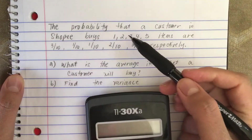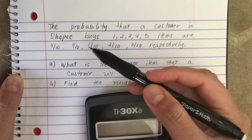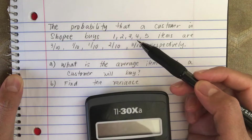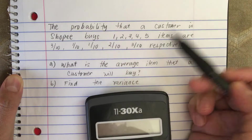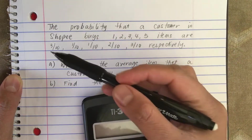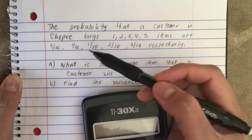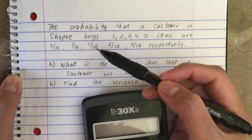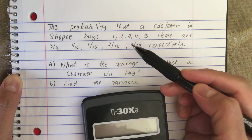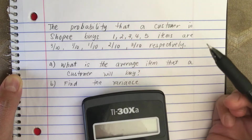The probability that a customer in Shappi buys 1, 2, 3, 4, or 5 items are 3 over 10, 1 over 10, 1 over 10, 2 over 10, and 3 over 10 respectively.